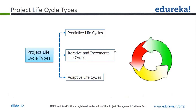In iterative and incremental, the period is around two to four months, whereas in adaptive life cycle the period is two to four weeks — that's the main difference between the two. This is done for large or complex projects in order to reduce risk, and the team gets to incorporate feedback and lessons learned between iterations.